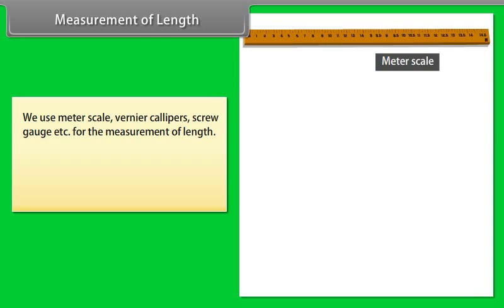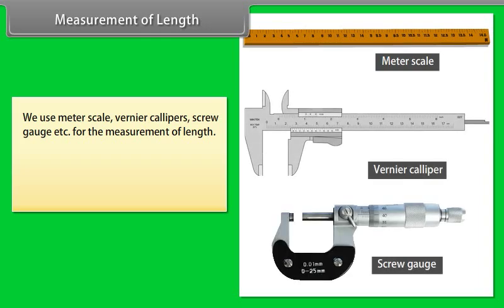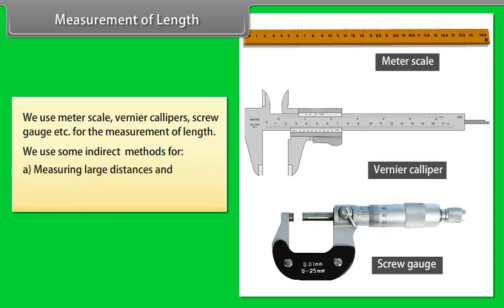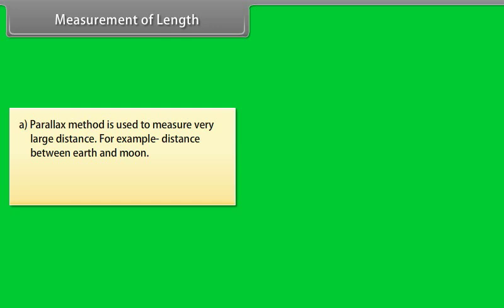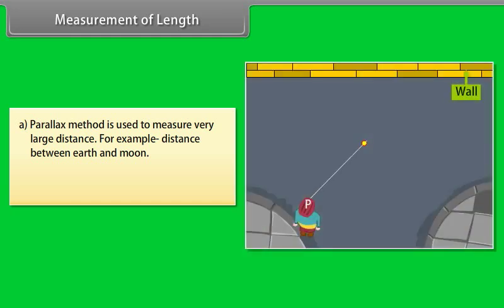Measurement of length: We use meter scale, Vernier calipers, screw gauge, etc. for the measurement of length. We use some indirect methods for measuring large distances and measuring very small distances. Parallax method is used to measure very large distances, for example, distance between Earth and Moon. Let's understand with an example: a girl is observing a rod against a wall from two different points P and Q. She notices that the position of the rod seems to change with respect to the wall. This is known as parallax.